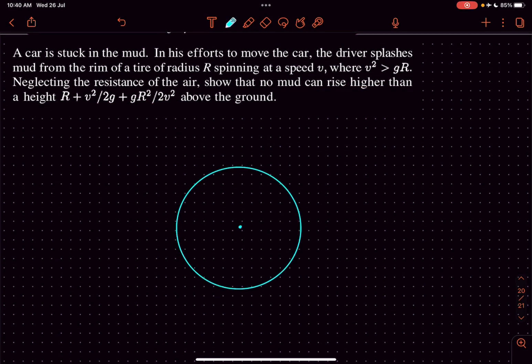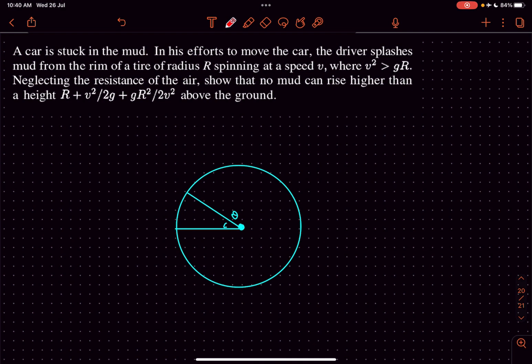Basically we have to find the maximum height to which a mud particle rises. Let's try to determine that as a function of theta. Let's say a mud particle was projected off the rim of the tire at an angular position of theta, so clearly its speed is going to be v. Now after it is projected off the tire it's going to undergo projectile motion.